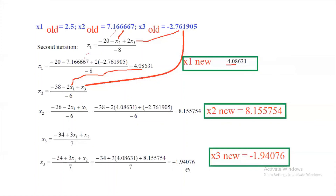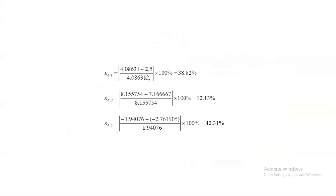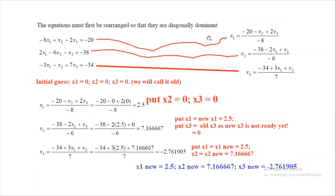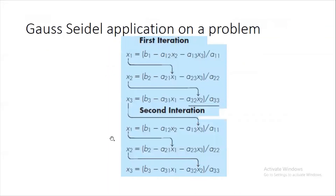For error analysis, we compute the absolute relative error: |(current value − previous value) / current value| × 100, applied to x1, x2, and x3. Homework: perform the third and fourth iterations. After completing these, revisit the schematic picture. If anything is unclear, please contact me. Good luck and thank you.